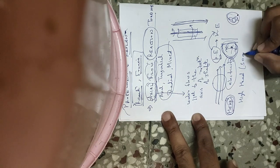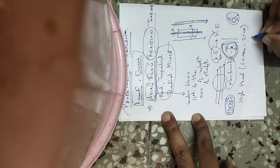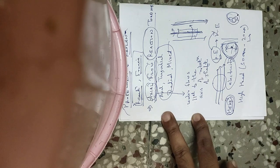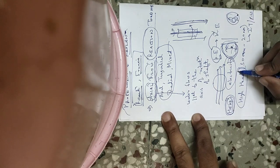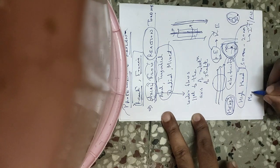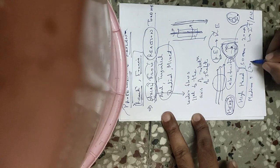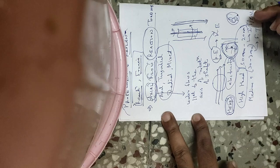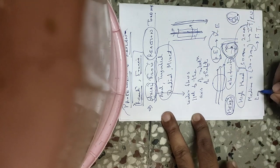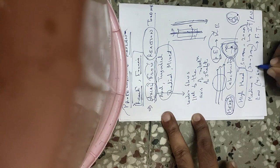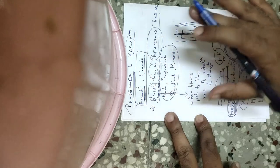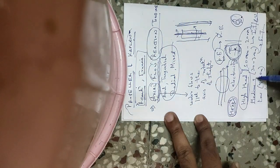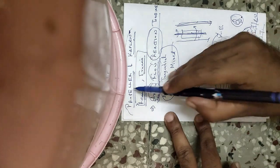For a high head system — say 500 to 2000 meters — you use an impulse turbine or Pelton wheel. For medium head — around 30 to 300 meters — you use a Francis turbine. For low head — around 4 to 60 meters — that is where propeller and Kaplan turbine come in.